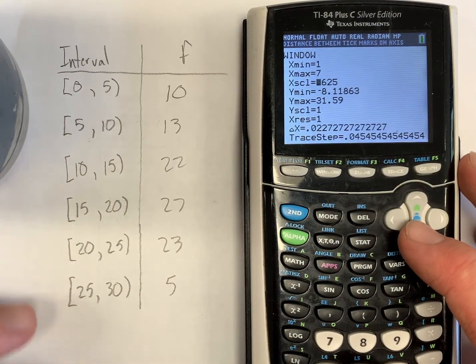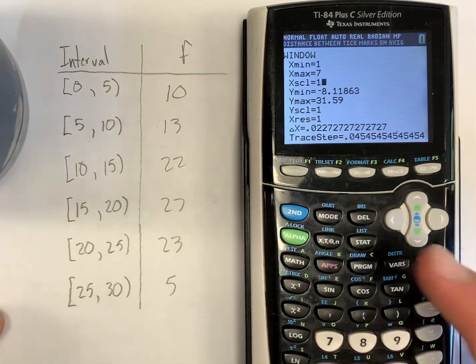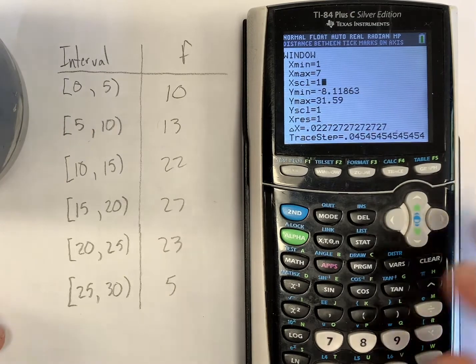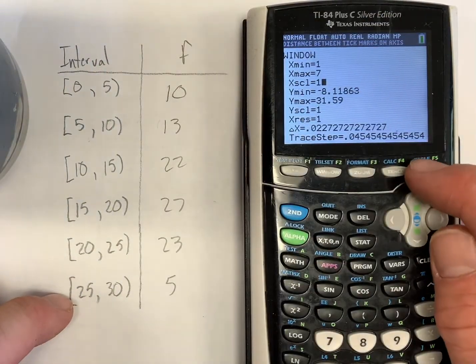And I'll set my x scale to one because I know that my bars are all right, my intervals are all one unit apart. So I'll go back into graph.